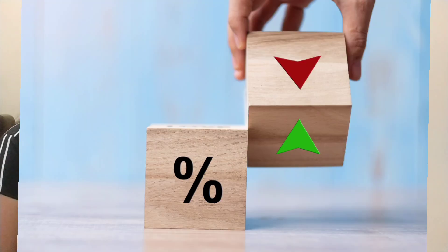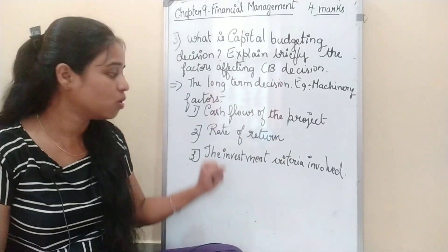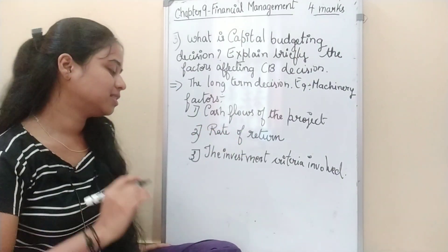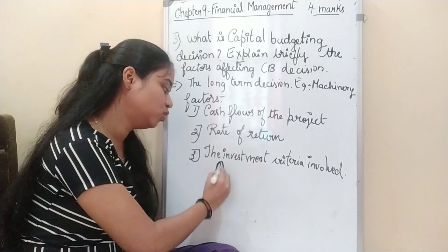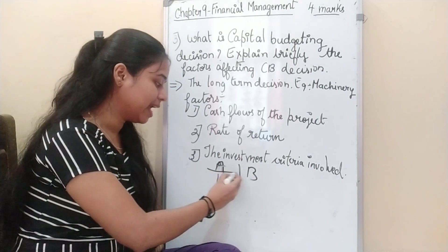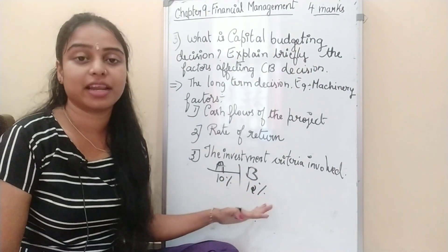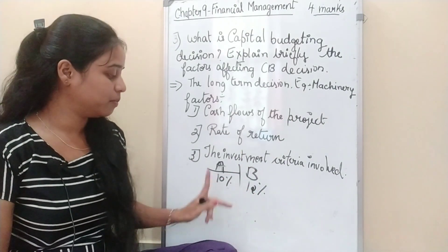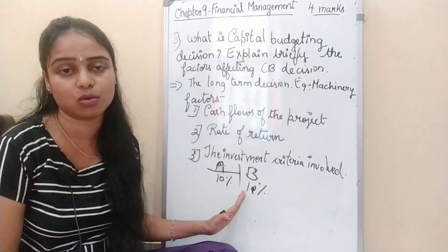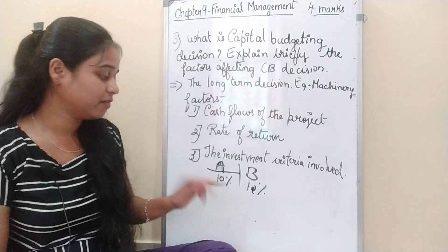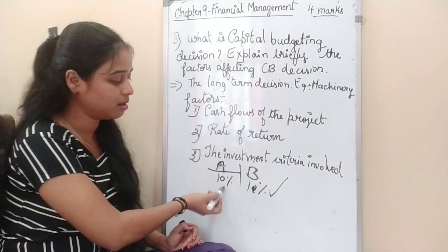The second factor is rate of return. We consider the rate of return to decide whether to invest in a project, expand a branch, or replace machinery. For example, consider two projects: Project A gives a 10% rate of return and Project B gives 12%. Generally, we select the project with the higher rate of return, so here we would choose Project B.